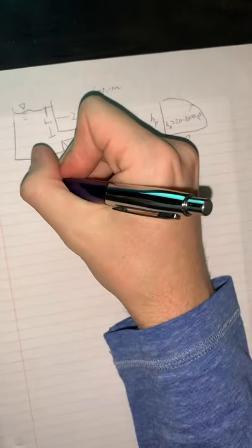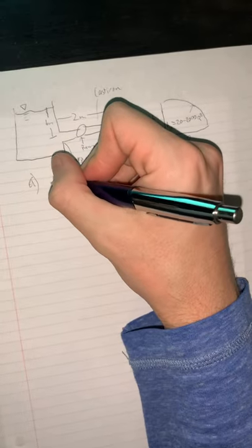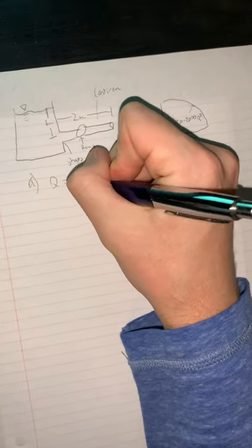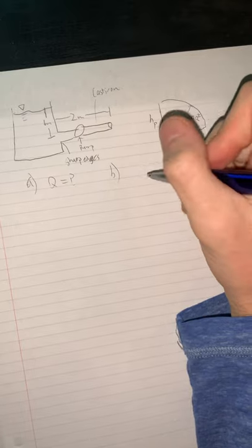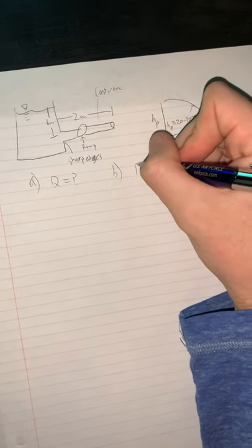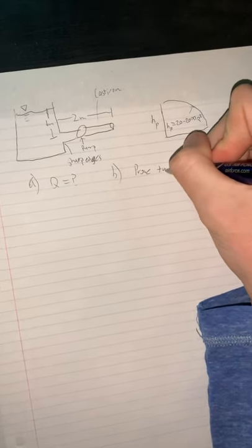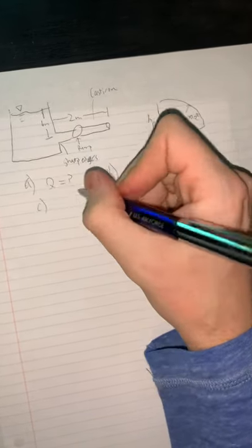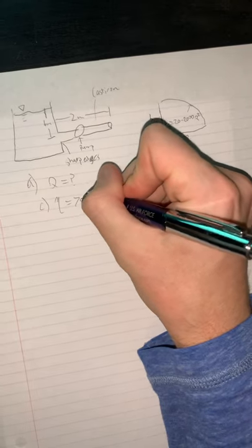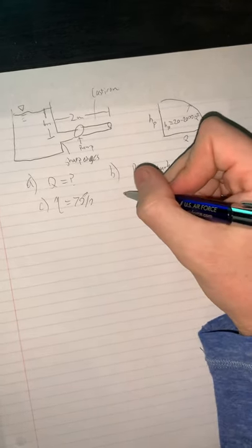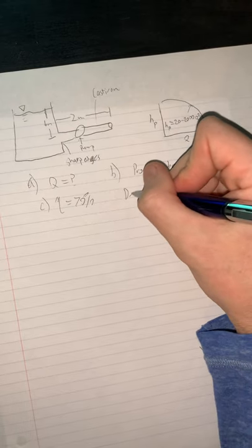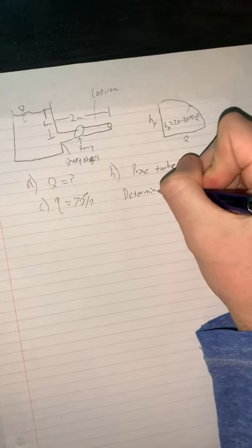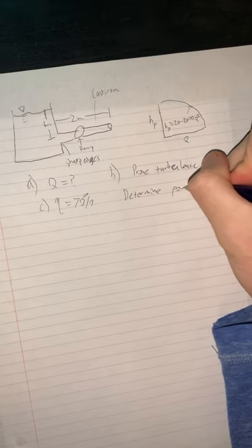The question asks us: Part A, we want to find Q, the volumetric flow rate. Part B, we're told it's turbulent but we want to prove turbulence through our Reynolds number. Part C, we're given an efficiency of 70% and we want to determine power.